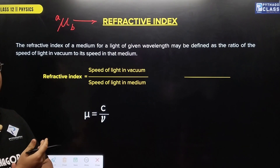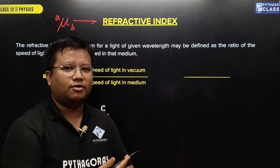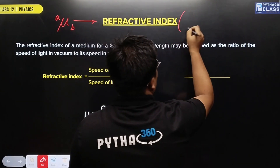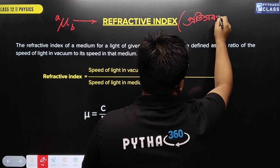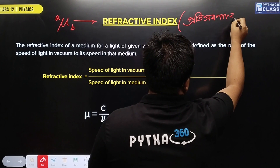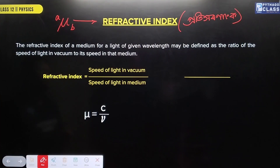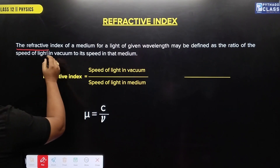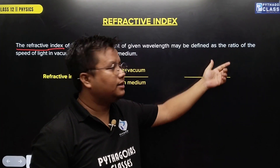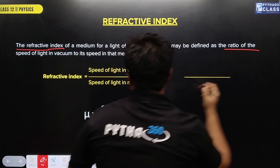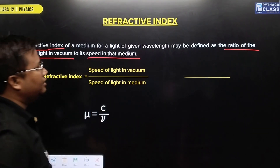What is refractive index? The refractive index of a medium for light of a given wavelength may be defined as the ratio of the speed of light in vacuum to its speed in the medium.